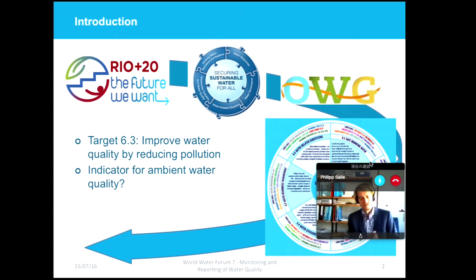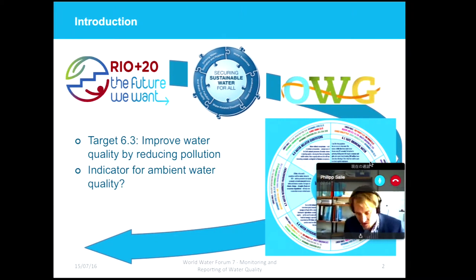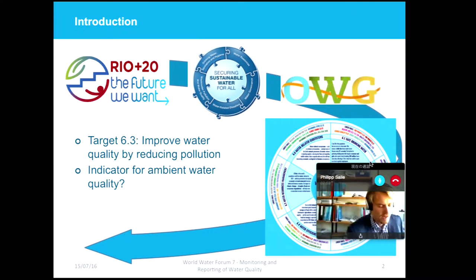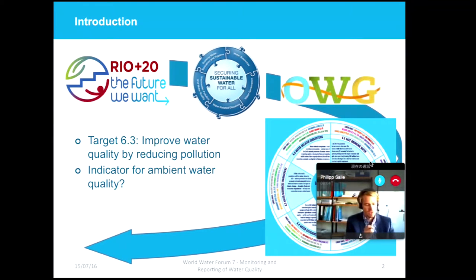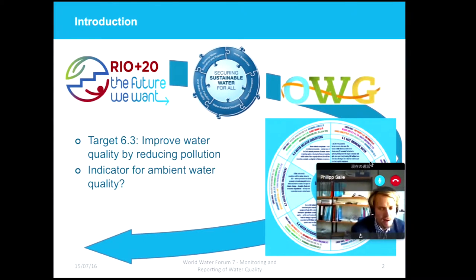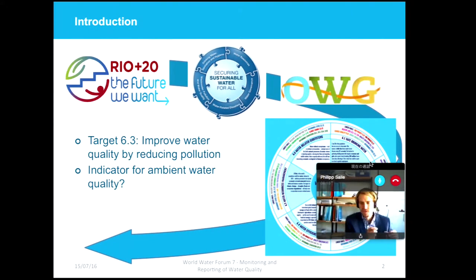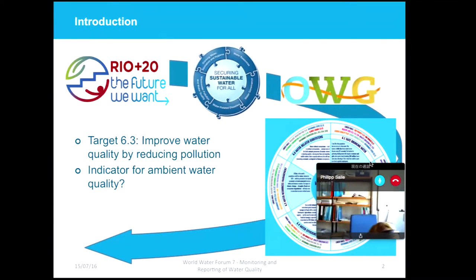I assume that you already talked about the sustainable development goals and SDG Goal 6 on water, so I don't go into too much depth here. At the moment we have the proposal for Goal 6 with six sub-targets, one of them being Target 6.3 covering water quality and the improvement of water quality by reducing pollution.